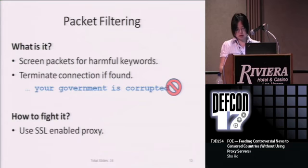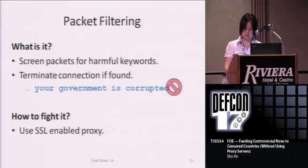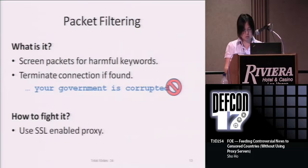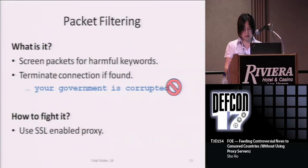This one is packet filtering. The way it works is by screening packets for harmful keywords, and if they find them, the censor will terminate the connection between the user and the website. To circumvent this type of blocking, we can tell the user to use an SSL-enabled proxy. SSL will encrypt the data, which makes it difficult for censors to perform real-time packet filtering.